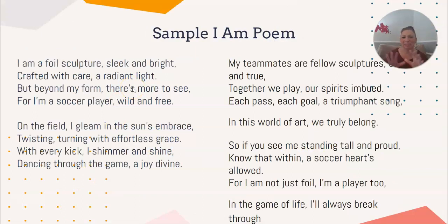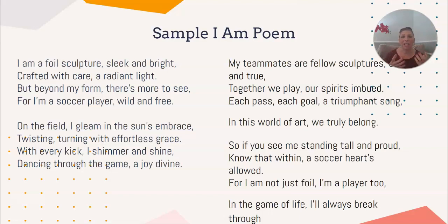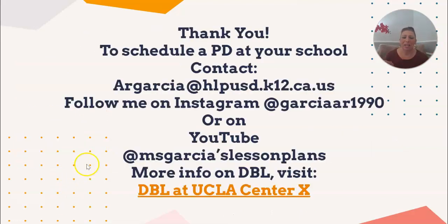Having them do an I Am poem based on their sculpture is a great idea. In a sample poem, they can incorporate that they're shiny because they're foil, they're bendable, they're flexible, they can take on many shapes — so many things you can do with just vocabulary, using foil to represent who they are. Here's a fun one about being a soccer player as a sculpture.